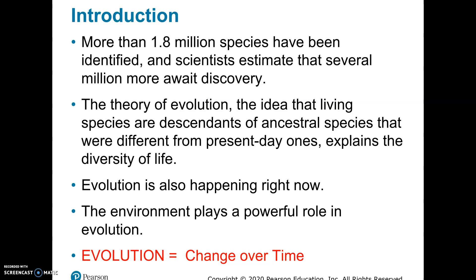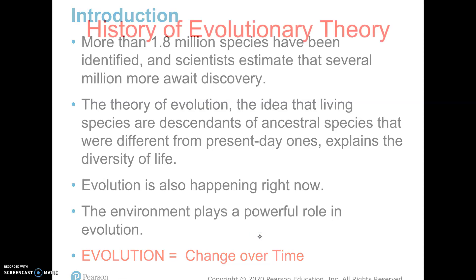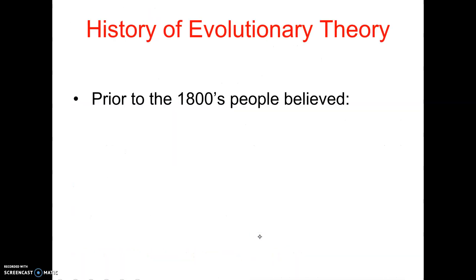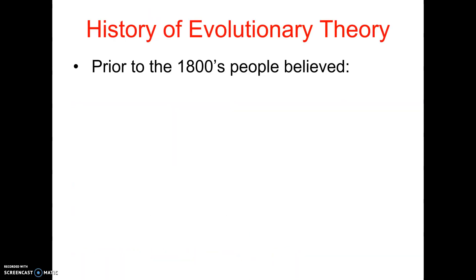We also know that evolution is still occurring and the environment plays a really big role. As our environment changes — things like global warming — they're affecting the survival of species: what organisms are going to be in the next generation, and which ones are going to be gone.